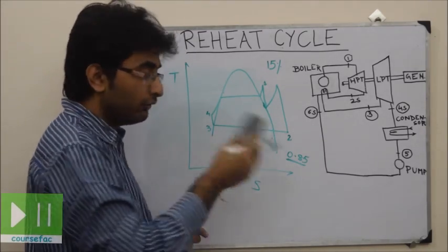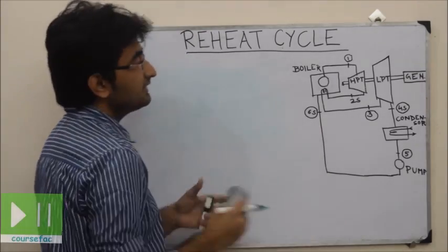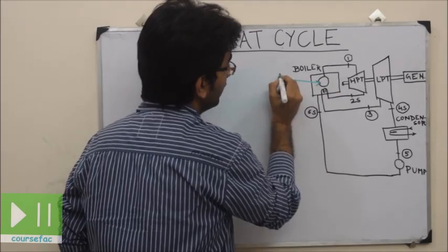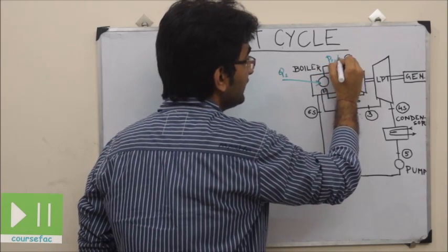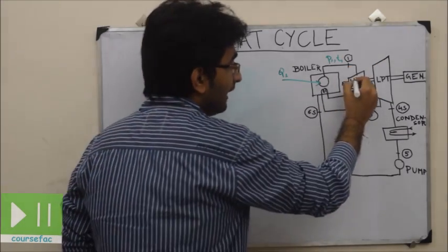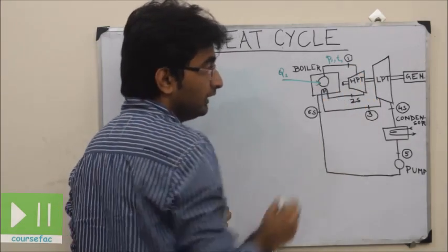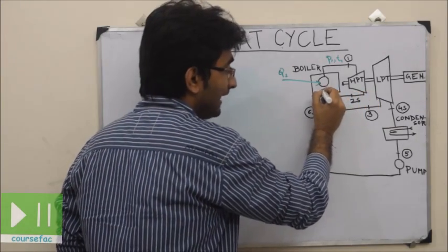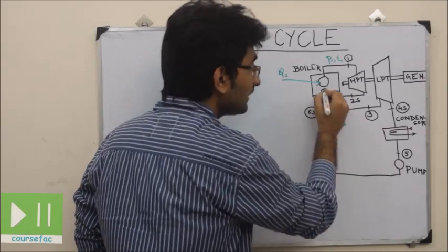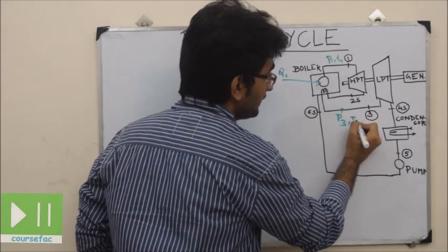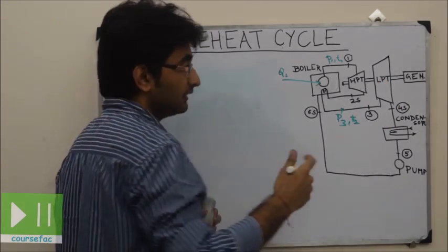Now I will explain this through a flow diagram. We have a boiler to which we supply heat Q1 at constant pressure. Steam at pressure P1 and temperature T1 goes to the high pressure turbine. After partial expansion in the high pressure turbine, the steam is sent back to the boiler to reheat it. After reheating at constant pressure P3 and the same temperature T1, the steam is sent to the low pressure turbine for further expansion.